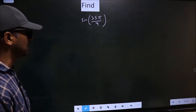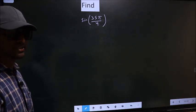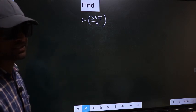Find sin 35π by 4. To find this, we should follow this method C.